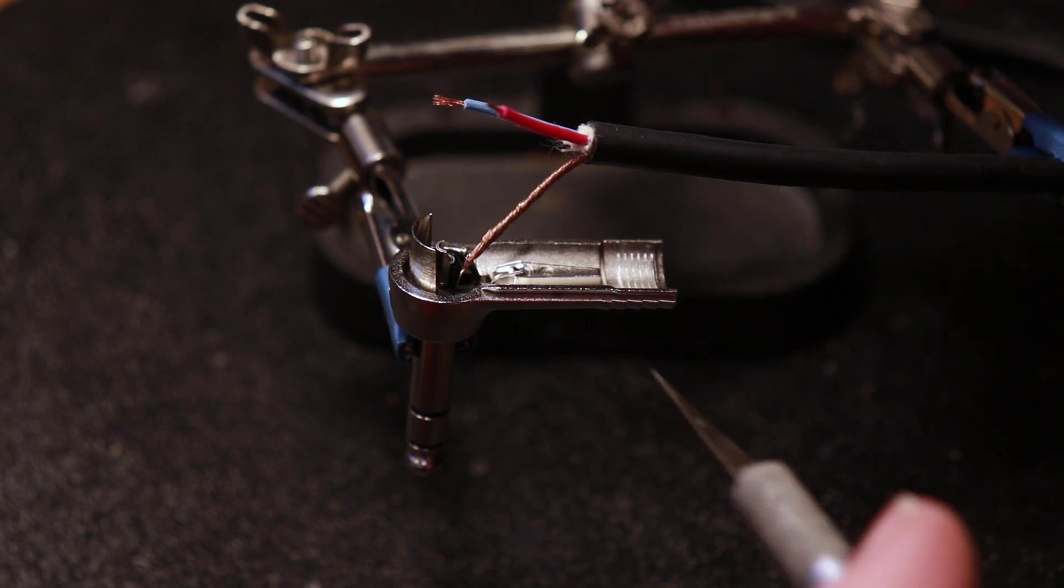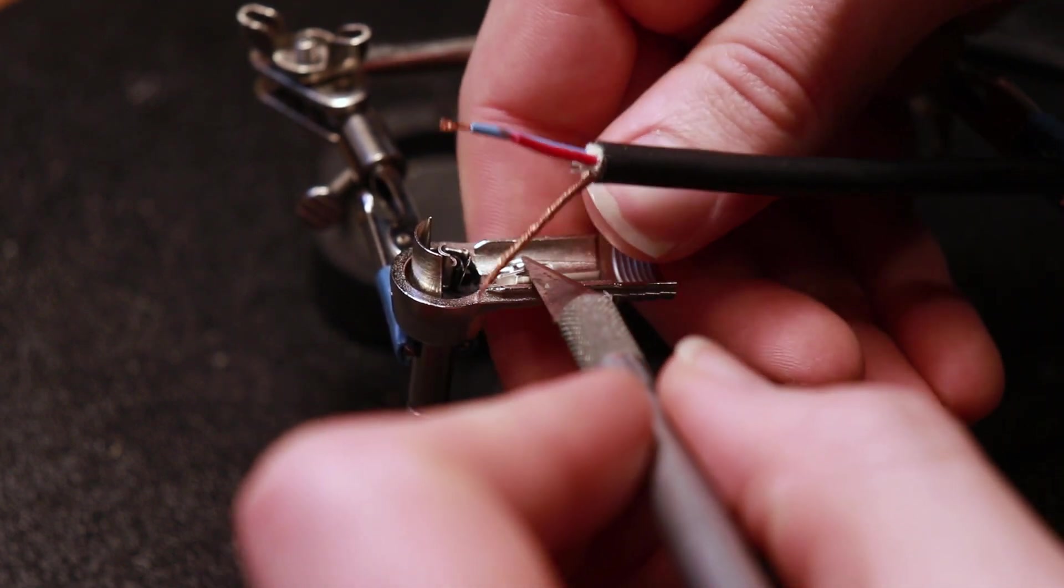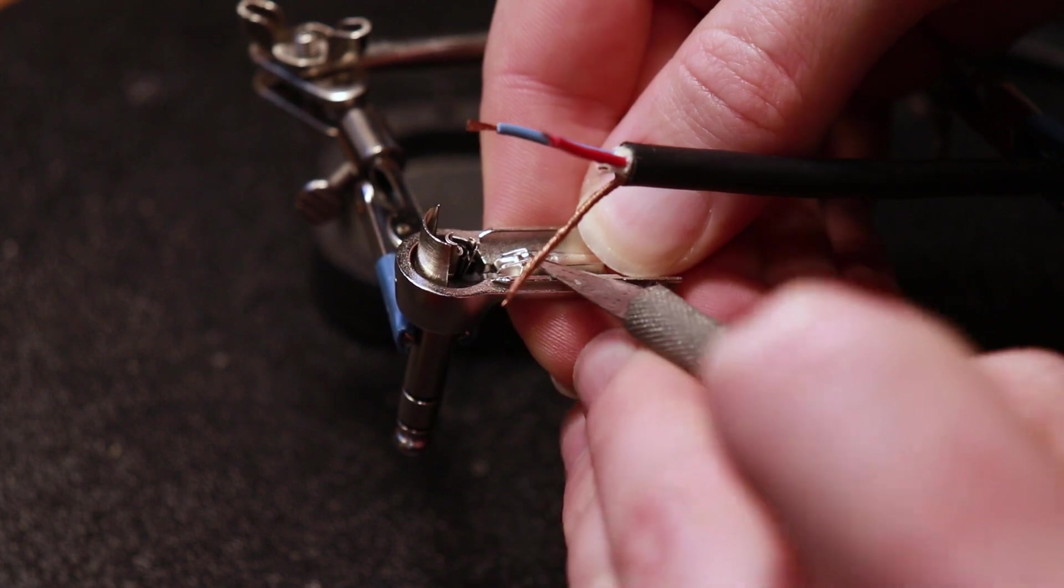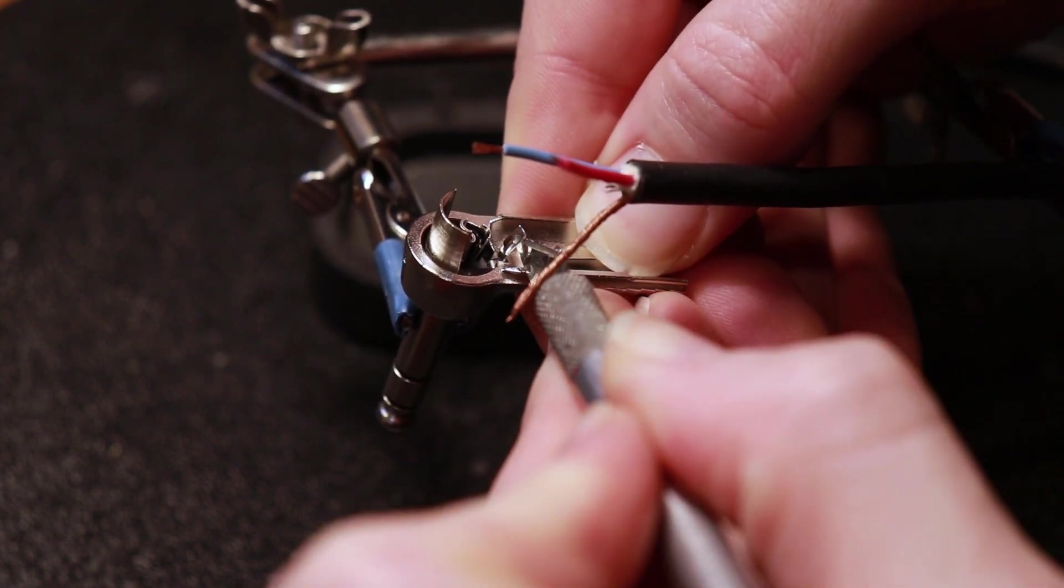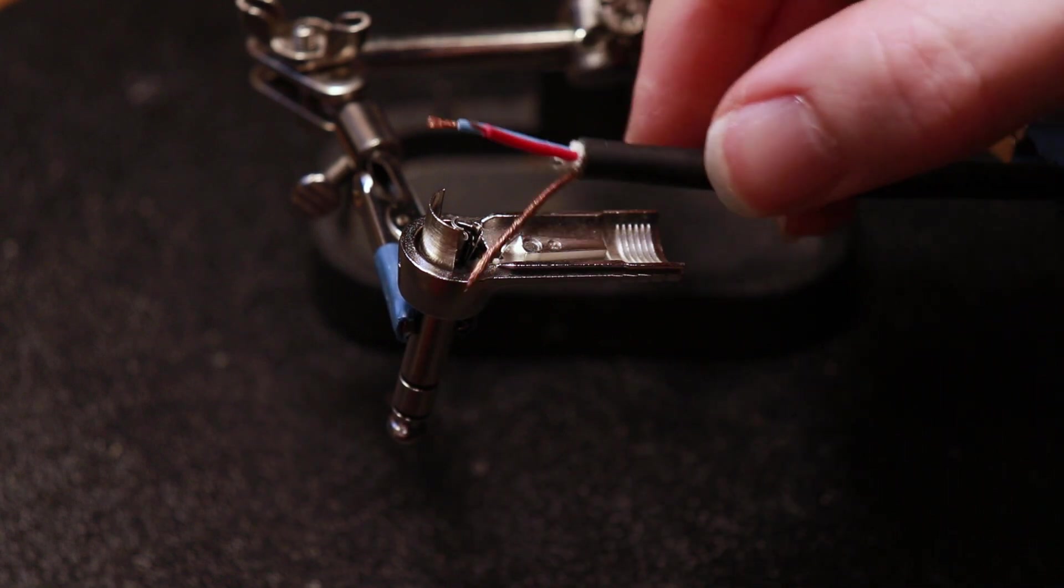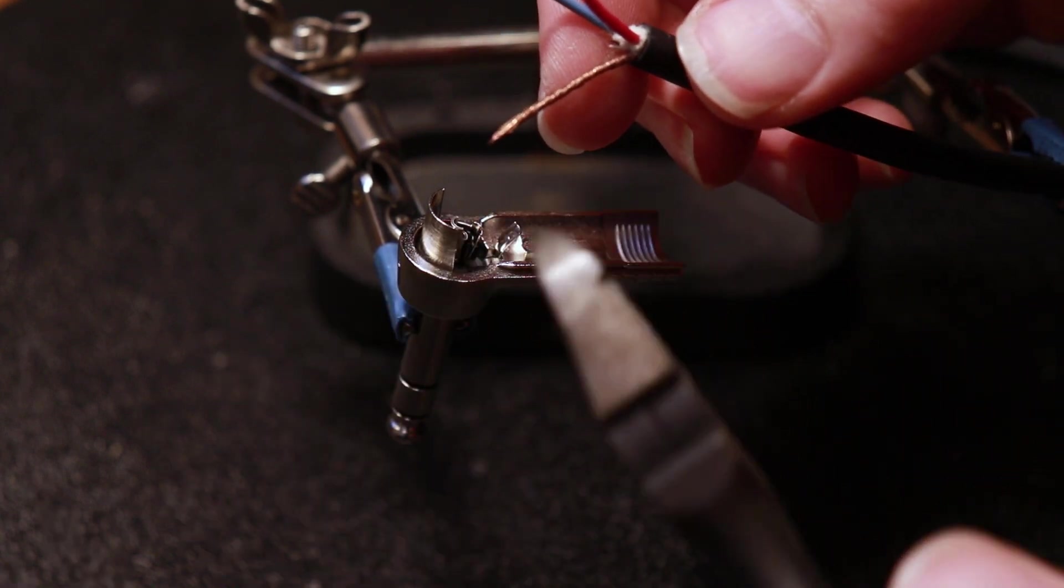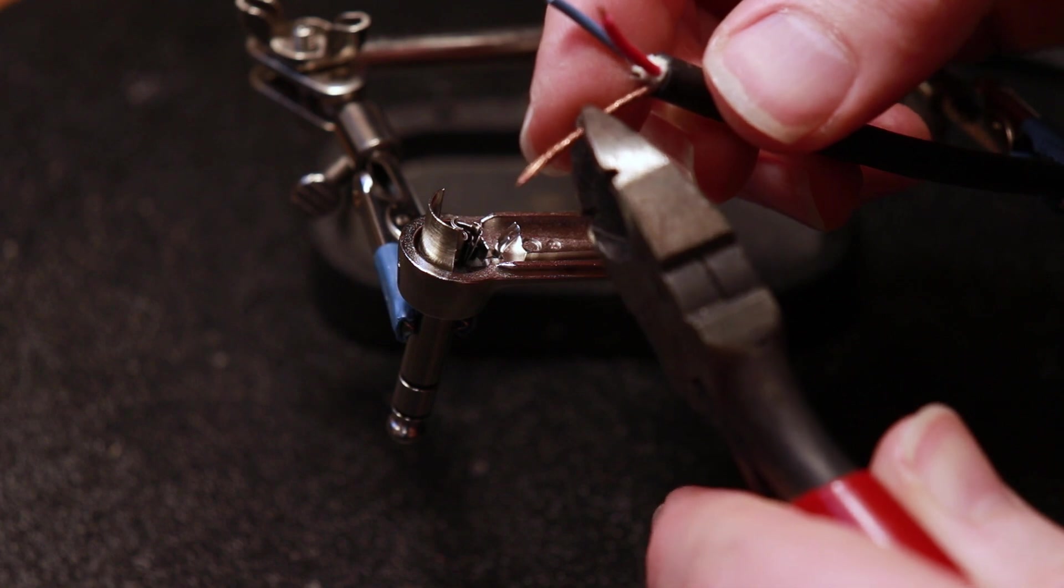So I'm going to start with the ground wire on this end, and what I can do is bend up this tab to make it a little bit easier for me to solder to, and I'm going to cut this ground wire a little bit shorter. I don't need it to be this full length.